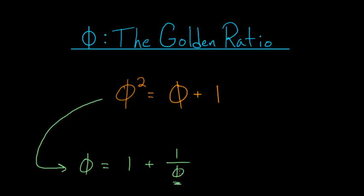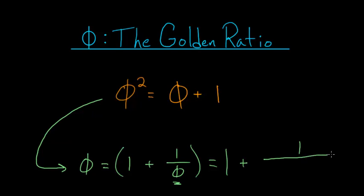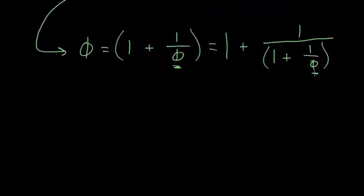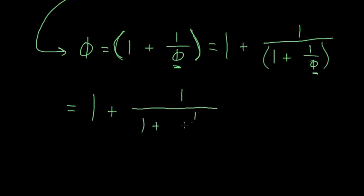What you can notice is that we have a phi in this denominator, and we can substitute this entire value into the denominator, since all of this in parentheses is just equal to phi. So phi is 1 plus 1 divided by 1 plus 1 over phi. We can substitute again, giving us 1 plus 1 divided by 1 plus 1 divided by 1 plus 1 over phi.